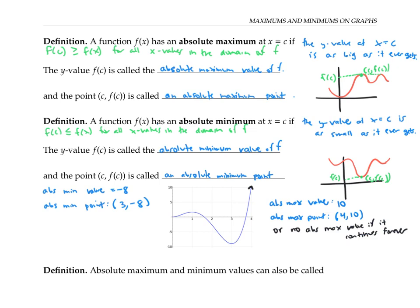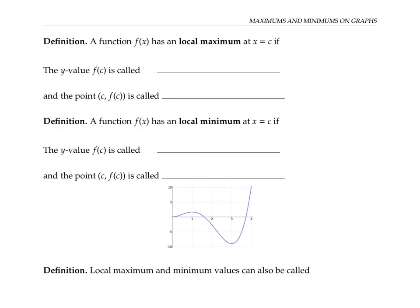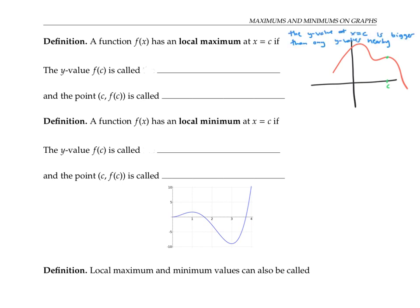Absolute maximum and minimum values can also be called global maximum and minimum values. A function f of x has a local maximum at x equals c if the y value at the x value of c is bigger than any y values nearby. It doesn't have to be the biggest y value anywhere in the domain — for example, for this function there are bigger y values up here. It just has to be the biggest y value nearby, or more precisely, in an open interval of x values around c. We can write this by saying that f of c is bigger than or equal to f of x, for all x values in an open interval around c.